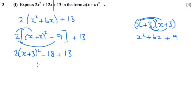And finally, what I can now do is collect up those two terms that we've got on the end there, minus 18 and plus 13, and that will become negative 5.